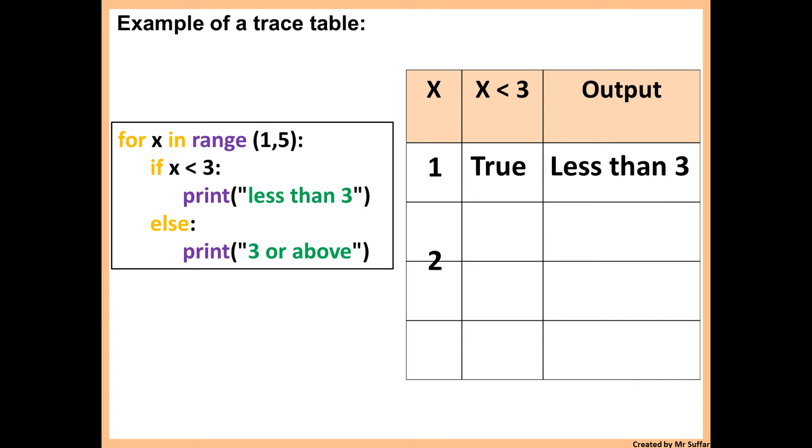Then x will increase by 1, so it goes to 2. Is 2 less than 3? Yes, that's true. So it prints less than 3 again. x will go to 3. Is 3 less than 3? That's false because 3 is the same as 3. It's not less than 3. So it will display 3 or above.